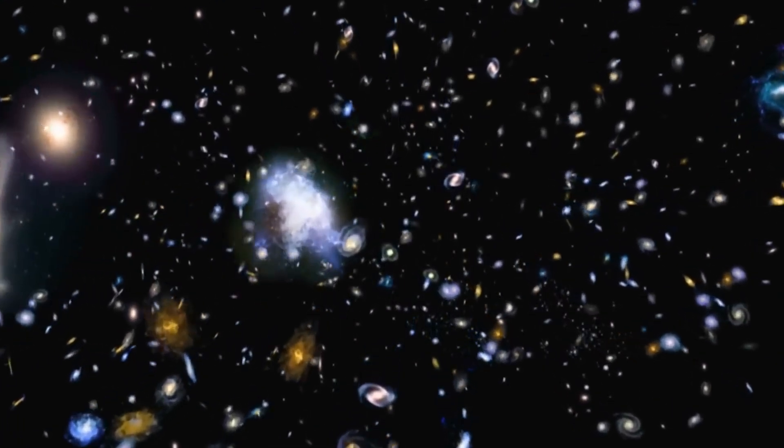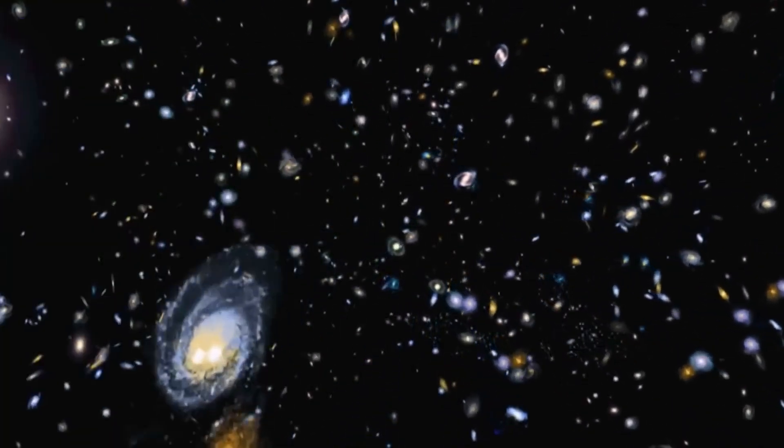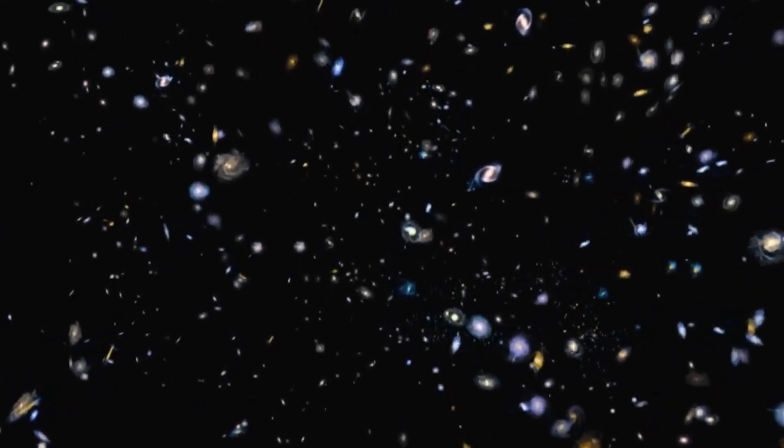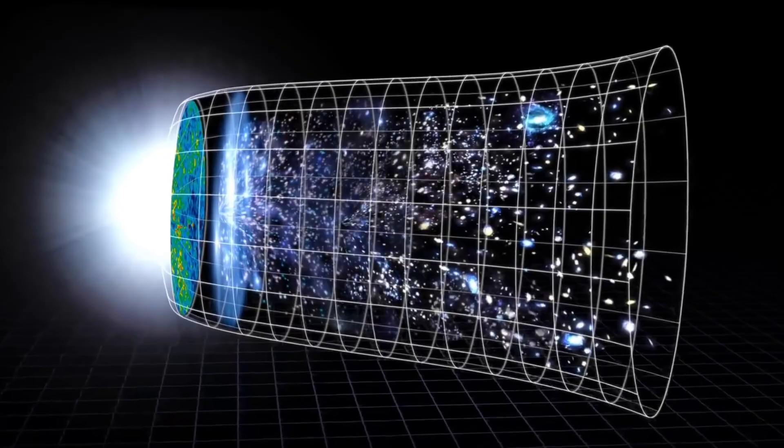That the universe looks the same in every direction and evolves according to the same rules everywhere. Within its first year of operation, Webb detected galaxies that appeared far too massive, far too organized, and far too luminous to fit into the current model of cosmic history.